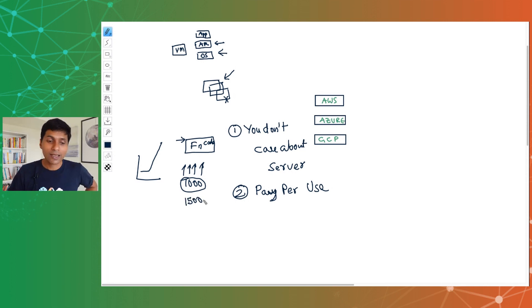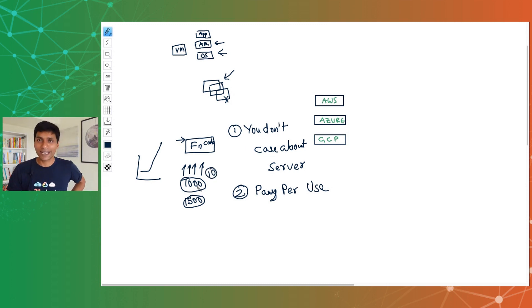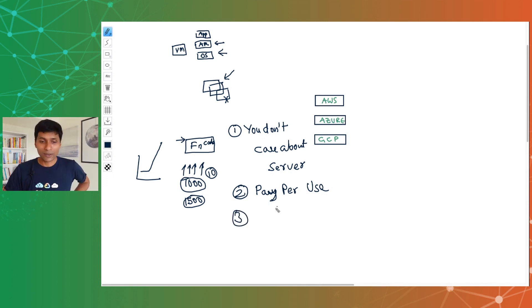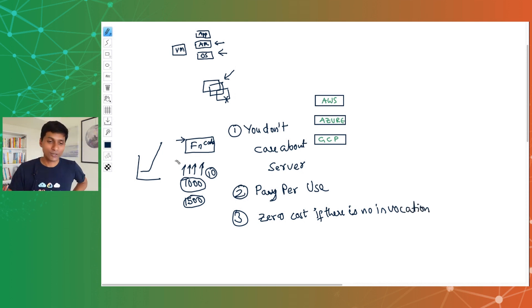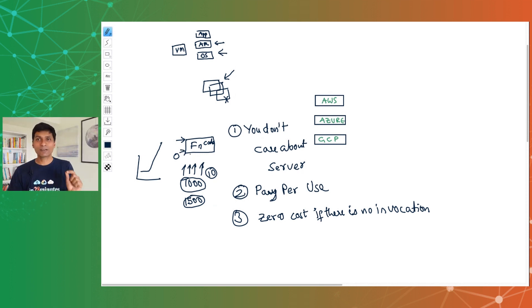If there are 1,500 invocations, you pay for 1,500. If there are only 10 invocations, you pay for 10. The golden rule I typically use to evaluate serverless is the third one: zero cost if there is no use at all. If there are no invocations, how much should you pay? It should be zero. When you have zero invocations and are paying zero — that, for me, is a golden test for a serverless service.